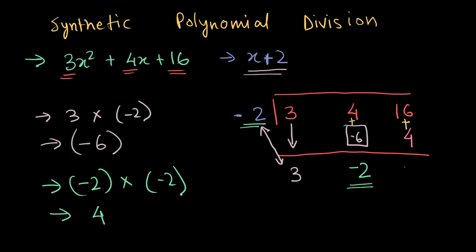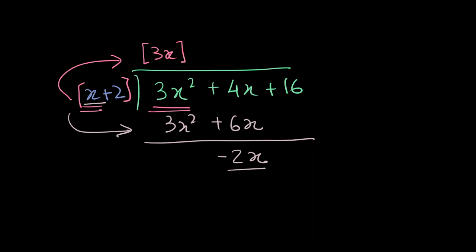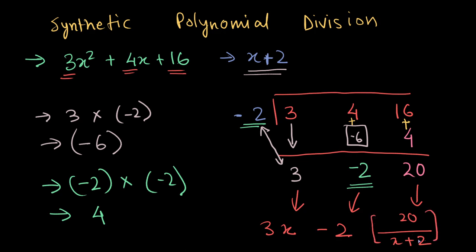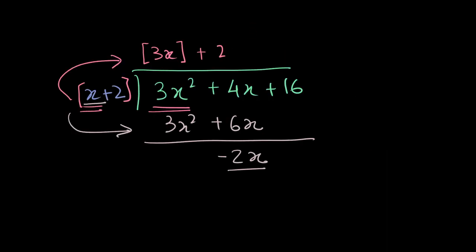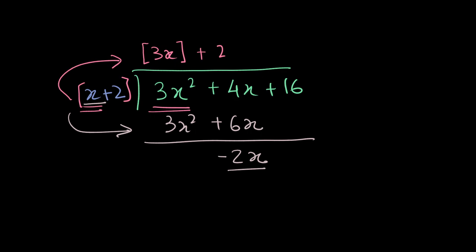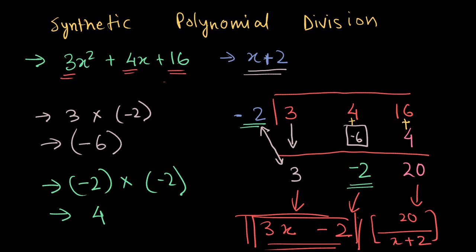Add both numbers and it becomes 20. Now you have a set of results: 3 becomes 3x, minus 2 stays as minus 2, and 20 is the remainder, written over x plus 2. So your quotient is 3x minus 2 with a remainder of 20 over x plus 2 — the same answer you'd get from long division, but much easier. I encourage you to try this out with more questions to get the hang of it.